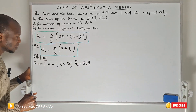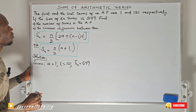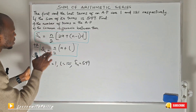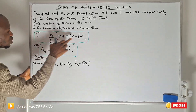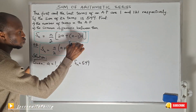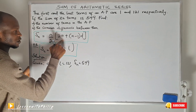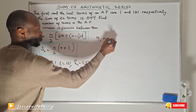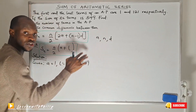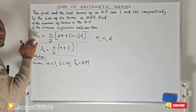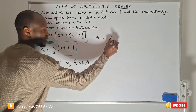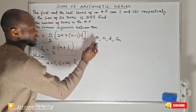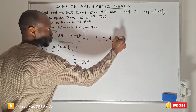Now from this question, do I know the common difference? No. For the first formula you need to know the first term, the number of terms, and the common difference. Out of these parameters, I know the first term and the sum, but not the common difference and not the number of terms.